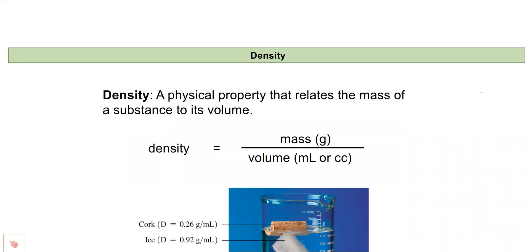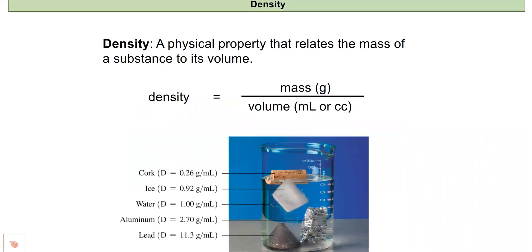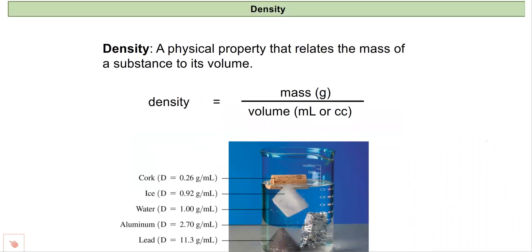In this lecture we're going to introduce a new physical property, density. This is something we can measure and something we can calculate. Density is a property that relates mass and its volume. So we can think of the density equation as being density equals mass divided by volume.